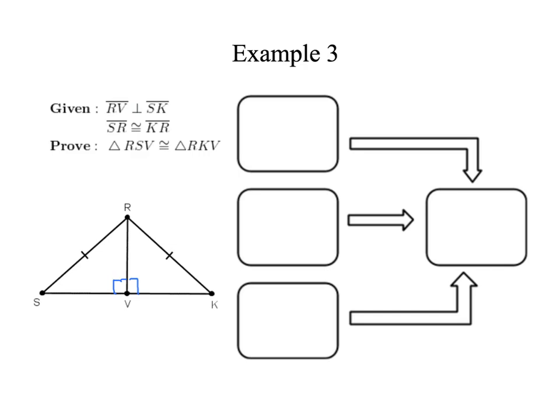So here's my side across from the right angles, my hypotenuse. So I've got a hypotenuse congruent to the other hypotenuse. And then I also have a leg here. They share that side, so that has to be the leg. So I do have HL. I'm going to go ahead and put that in.